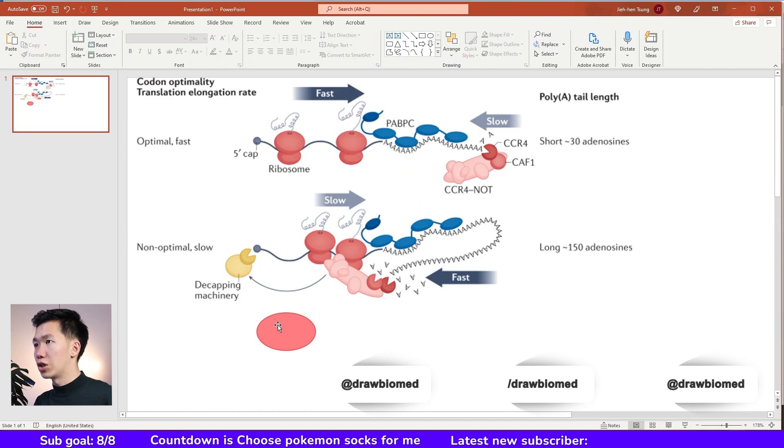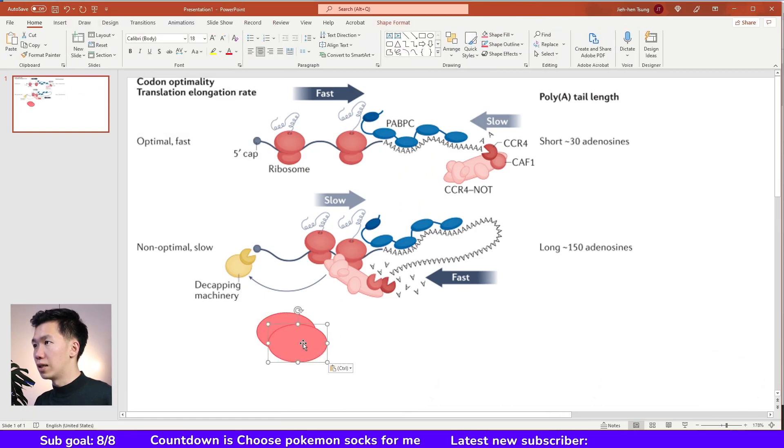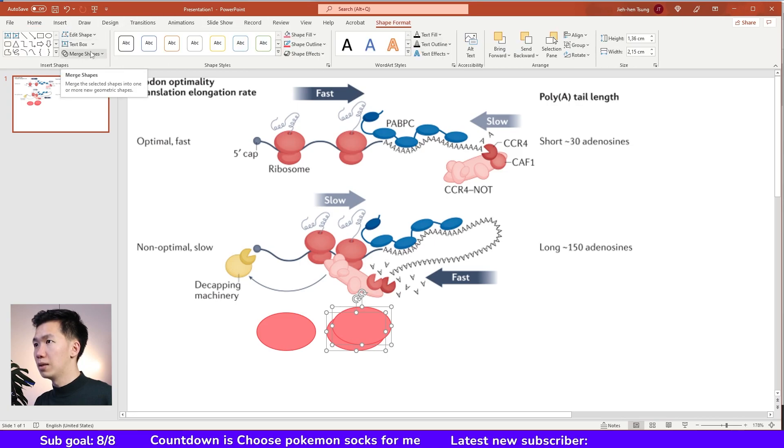To make a shadow, I will make two copies of the ellipse. Then I will select both of them and come up here to the shape format tab. Here's a tab called merge shape.